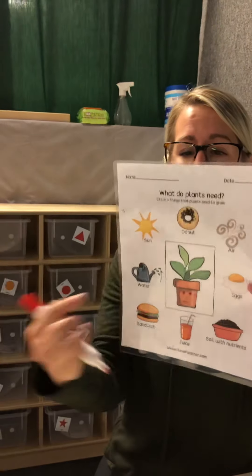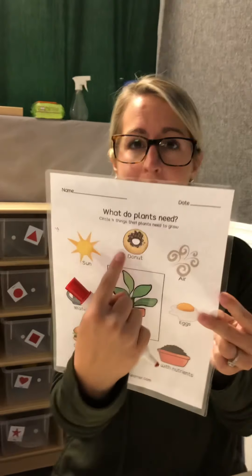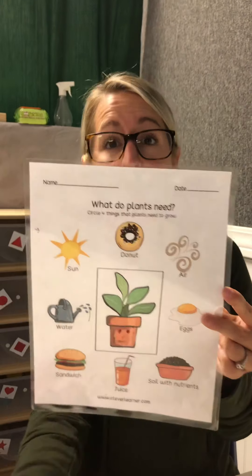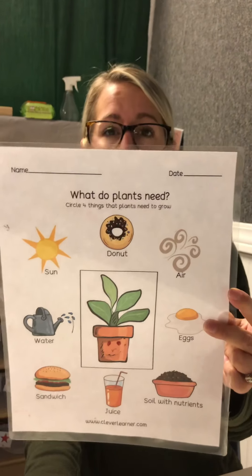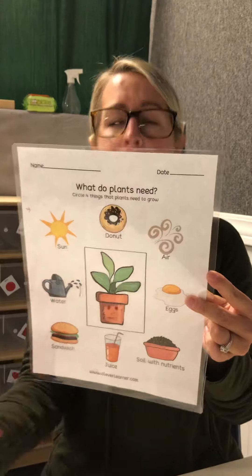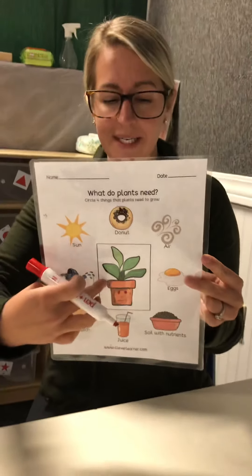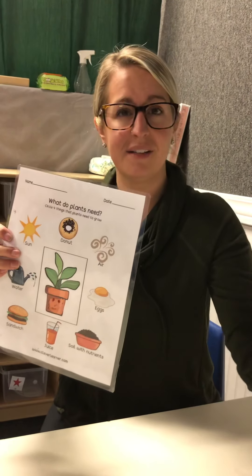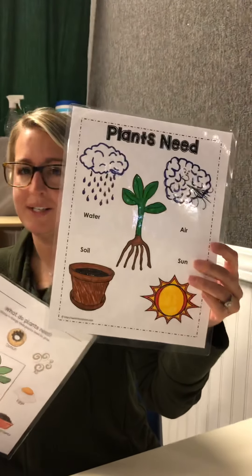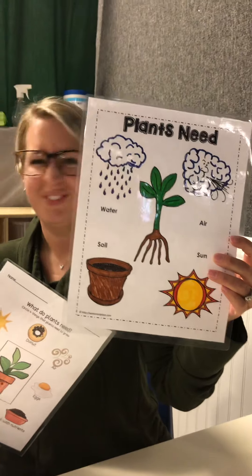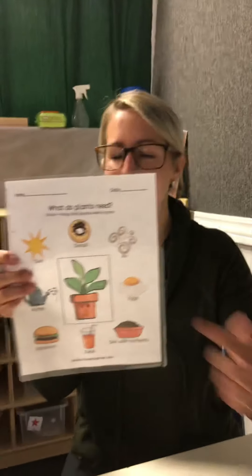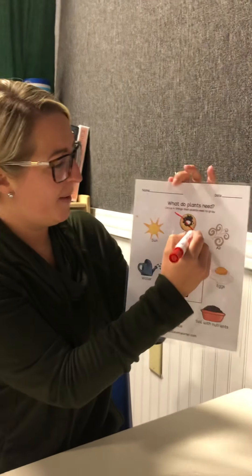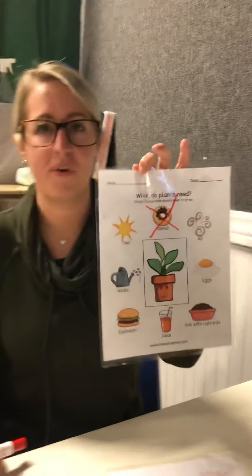We'll start at the top. Look at that yummy treat right there — it's a donut! Does a plant need a donut to grow? Let's look at our sheet. Do you see a donut on the sheet? No. A plant does not need a donut to grow. Plants can't eat donuts! So let's put a big X right over that donut.